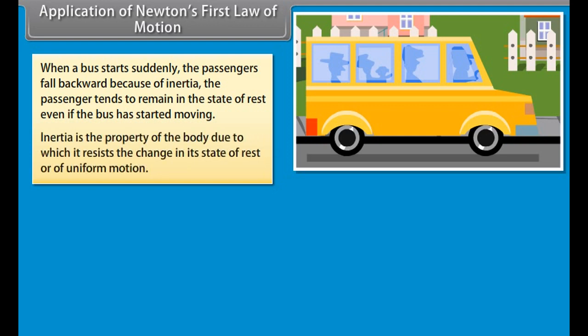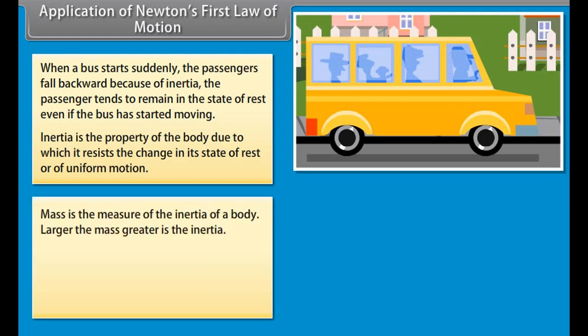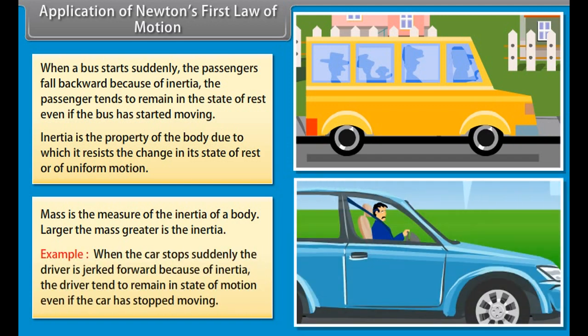Application of Newton's first law of motion. When a bus starts suddenly, the passengers fall backward because of inertia. The passenger tends to remain in the state of rest even if the bus has started moving. Inertia is the property of the body due to which it resists the change in its state of rest or of uniform motion.